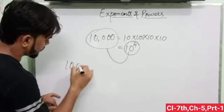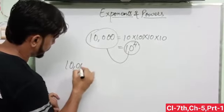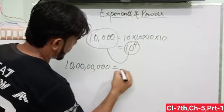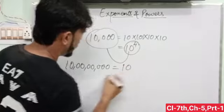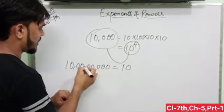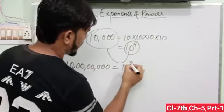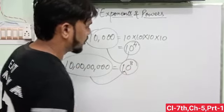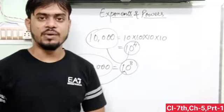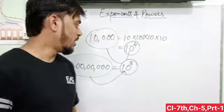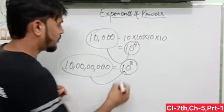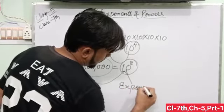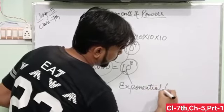When I have a number, then we can write 10 to the power 1, 2, 3, 4, 5, 6, 7, 8, 10 to the power 8. So this number can be written in short form 10 raised to the power 8. This is called exponent and this form is called exponential form.